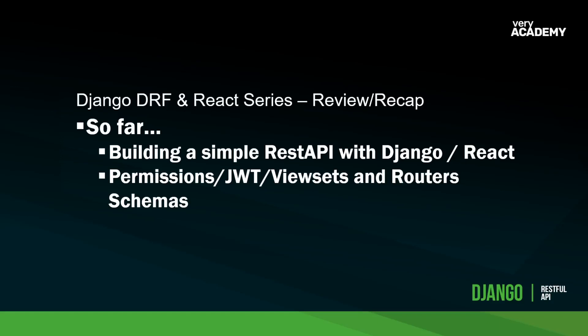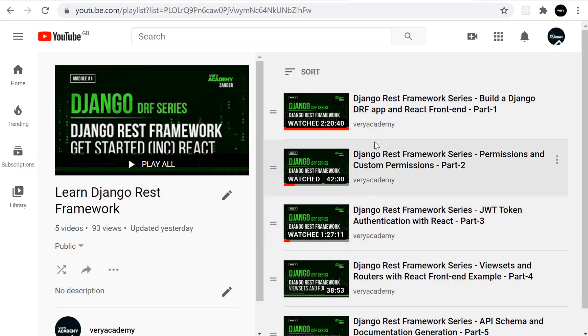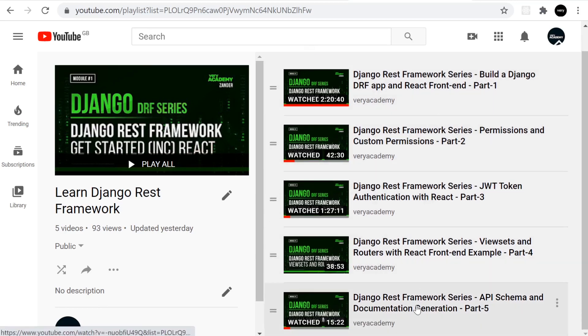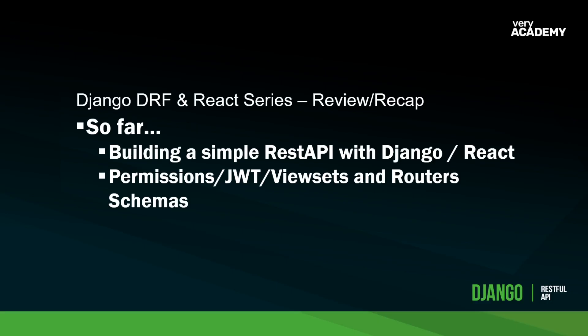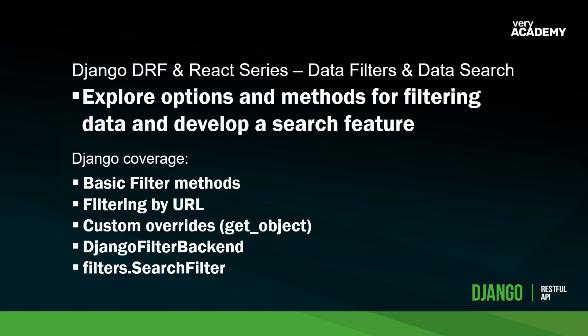Hello and welcome to the Django DRF and React series. This is the sixth tutorial in the series. If you want to check out the other tutorials, go to the playlist. You can watch this as a standalone tutorial and apply it to your particular project. I provide all the code — there's a link in the description. In this tutorial we're exploring options for filtering data, developing a simple search feature, and deploying that in the React front end so we can make queries on our Django REST API service.